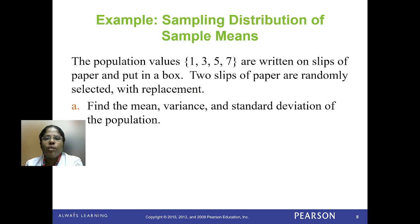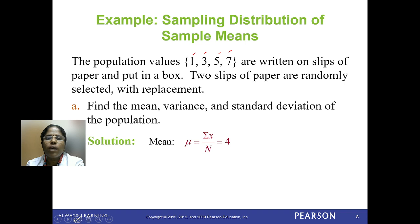Here is an example of the sampling distribution of the sample mean. The population values consist of only four values — 1, 3, 5, 7 — written on slips of paper and put in a box. Two slips are randomly selected with replacement. We need to find the mean, variance, and standard deviation of the population. The mean is (1+3+5+7)/4 = 16/4 = 4. The population mean is 4, the variance is 5.